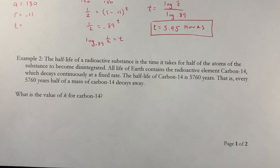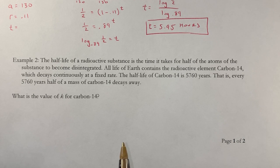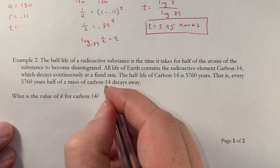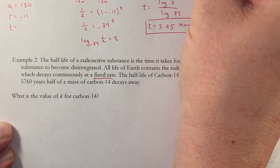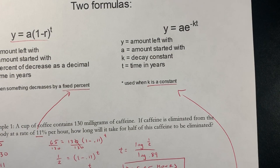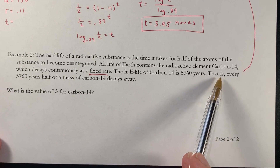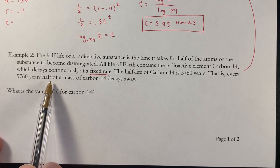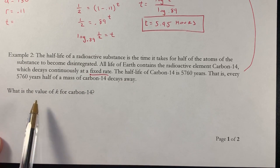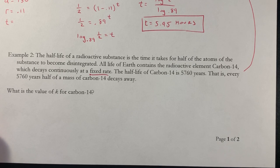Example 2: the half-life of a radioactive substance is the time it takes for half the atoms of the substance to become disintegrated. All life on Earth contains the radioactive element carbon-14, which decays continuously at a fixed rate. Since it says 'fixed rate,' that tells us we're using the formula y = ae^(-kt), where k is a constant. The half-life of carbon-14 is 5,760 years, and we want to find the value of k.